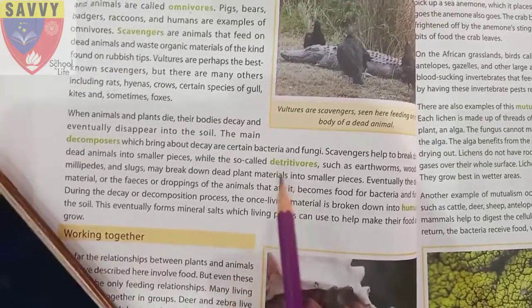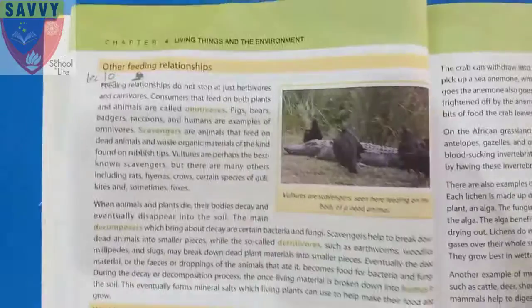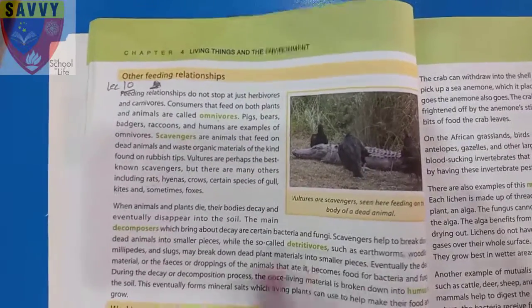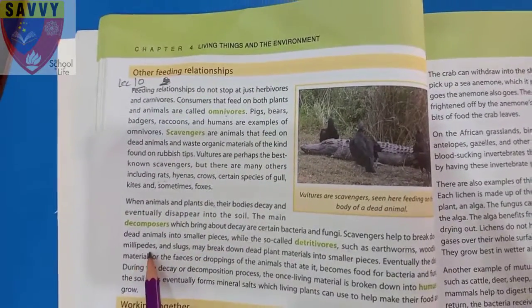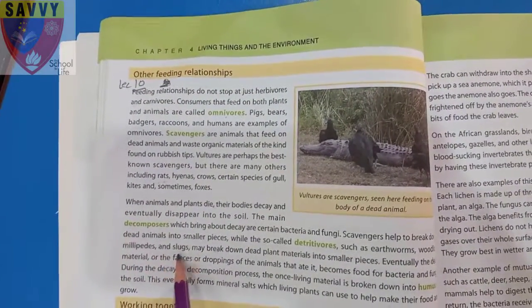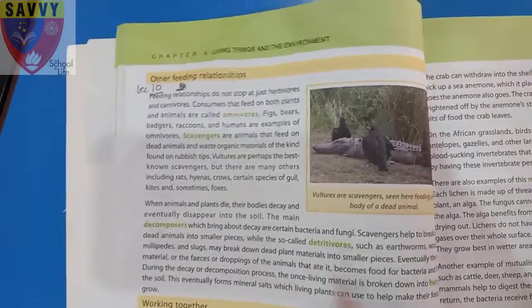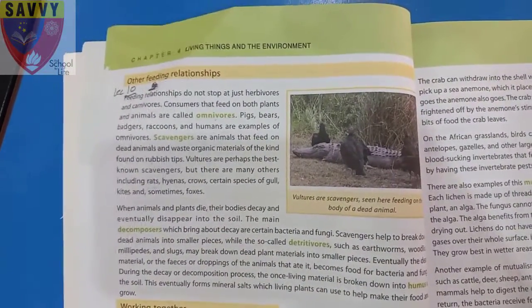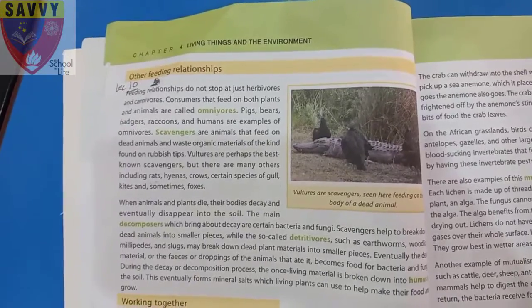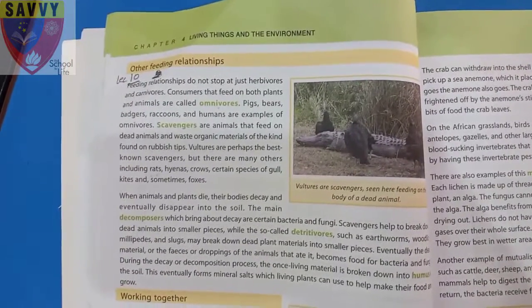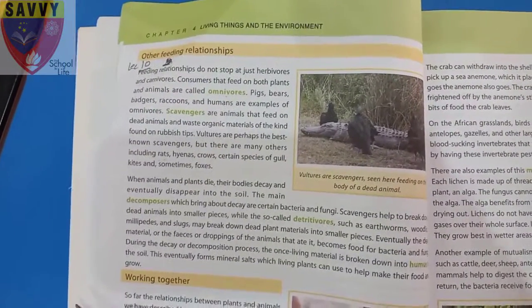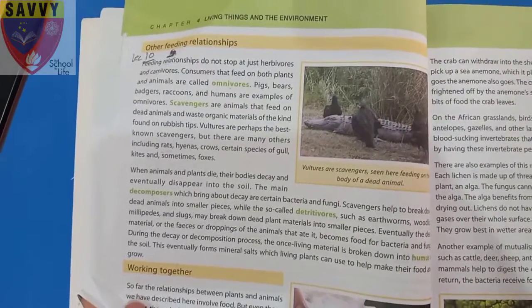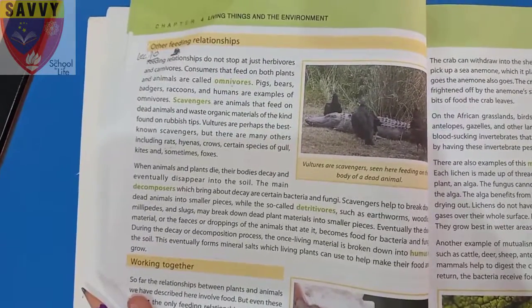Animals such as earthworms, woodlice, millipedes and slugs may break down dead plant materials into smaller pieces. Eventually these become food for bacteria and fungi during the decay or decomposition process.